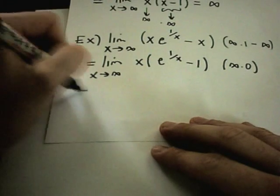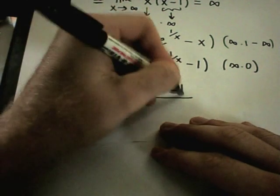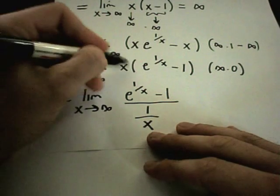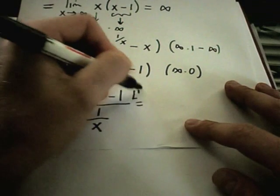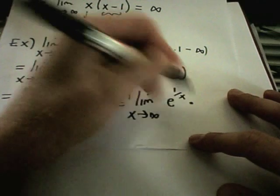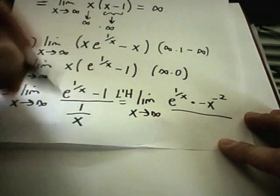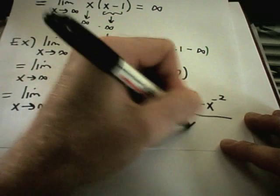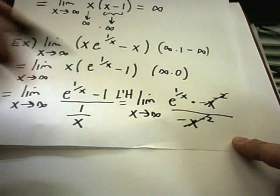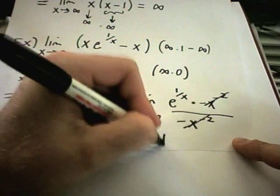At this point, I'm going to put one of these in the denominator. I'll leave the e to the 1 over x minus 1 in the numerator — I usually leave the more complicated expression on top — and in the bottom I'll take 1 over x. Using L'Hôpital's rule, the derivative of e to the 1 over x is e to the 1 over x times negative x to the negative second. The derivative of 1 over x on the bottom is also negative x to the negative second. These cancel, leaving e to the 1 over x, and as x goes to infinity that gives e to the 0, or 1.